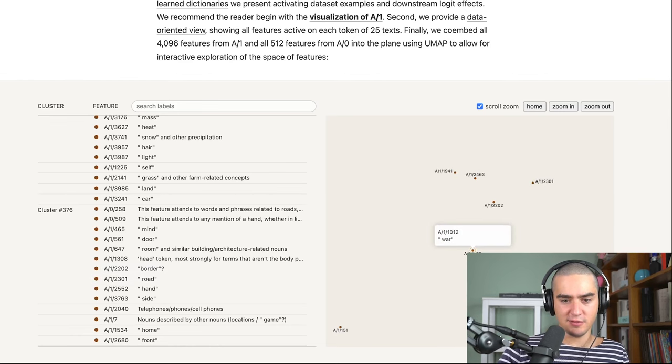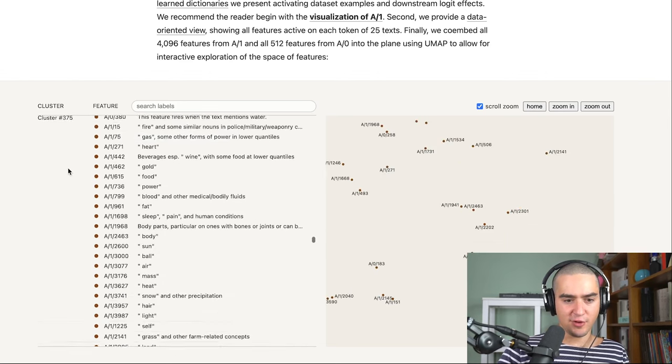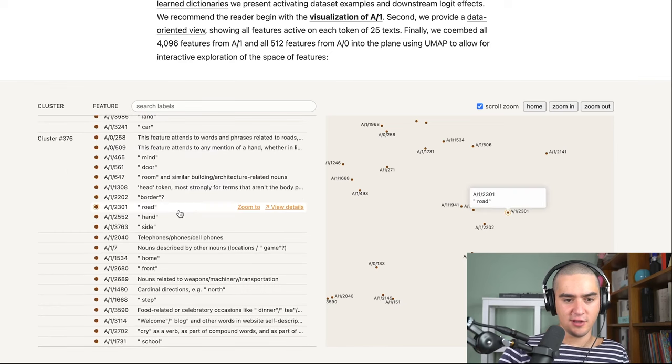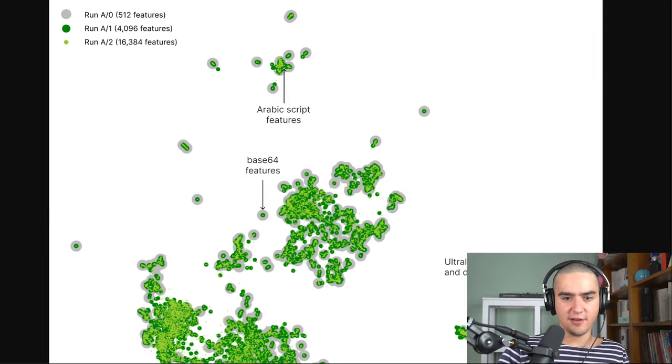And they have a number for each feature. And most of them are kind of interpretable and that they're grouped in some kind of cluster. So you have like hundreds of clusters that kind of make sense. They also have some visualization here with different runs. So A0 is when you have only 500 features, which is you don't actually have this overcomplete thing. You just have the same number of features in the middle. It's more like the features that were actually in your MLP from the beginning. A1 is the thing we care about and A2 is more features.